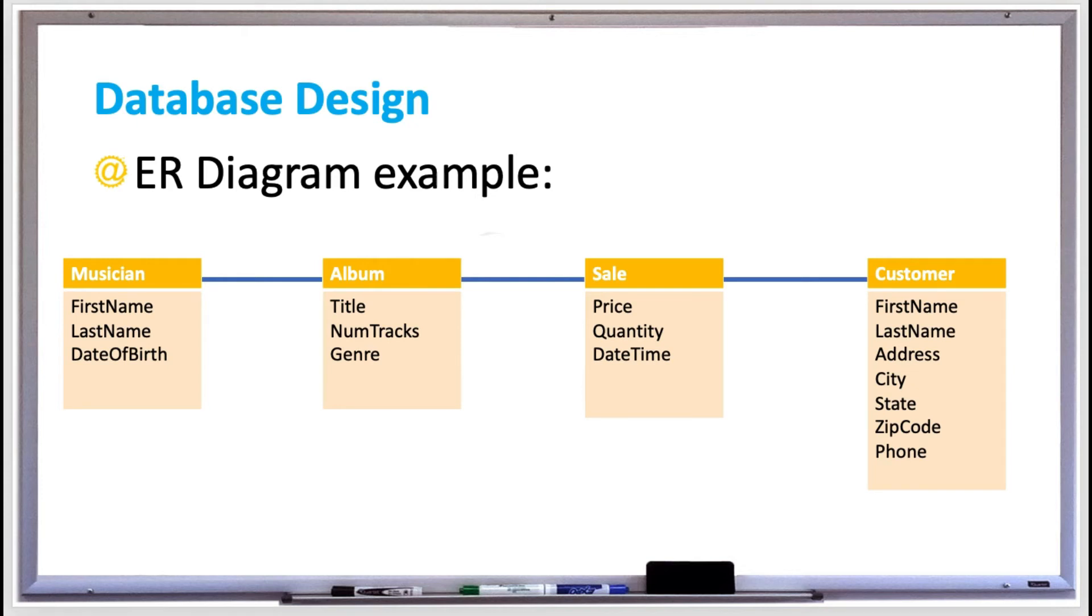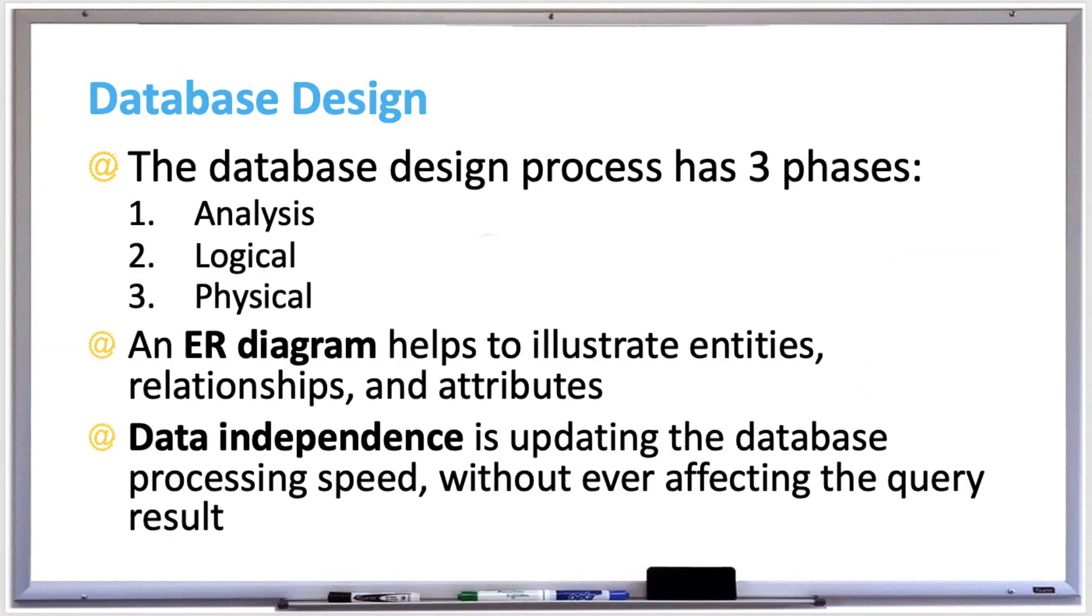You would set a sale price, the quantity of that album being sold, and the date and time of when it was sold. And then the customer would be, let's say, your information if you were to buy that Kanye West album. The ER diagram is part of the analysis design phase.